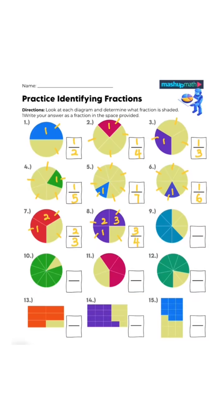One two three — three fourths. One two three four five six seven eight — five eighths. One two three four five six seven eight nine ten — nine tenths.